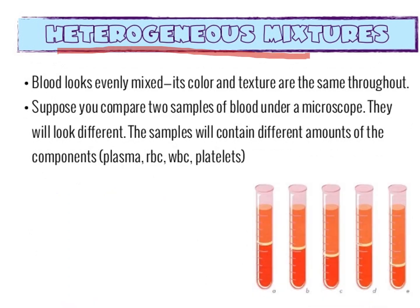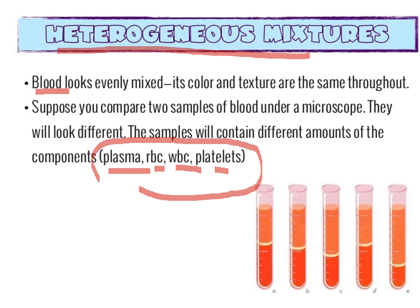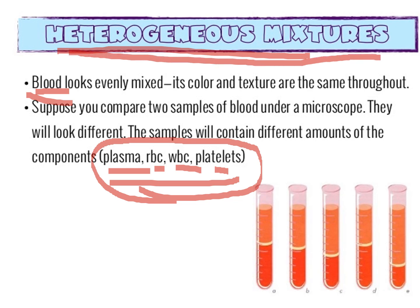Okay, heterogeneous mixture. Blood has components of plasma, RBC, white blood cells, and platelets. Take note class, these four are components of blood. They do not mix together — they are present in blood as part of its composition. That is why blood is an example of a heterogeneous mixture. We cannot see them with our eyes; we need a microscope to identify the RBC, plasma, WBC, and platelets.